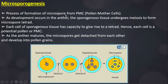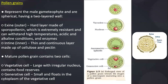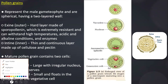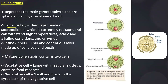The pollen grain consists of a large vegetative cell with an irregular nucleus that contains the food reserves, and a generative cell which is a small cell that splits into two male gametes at the time of pollen tube formation. The exine is made up of a hard layer called sporopollenin, which is indestructible.